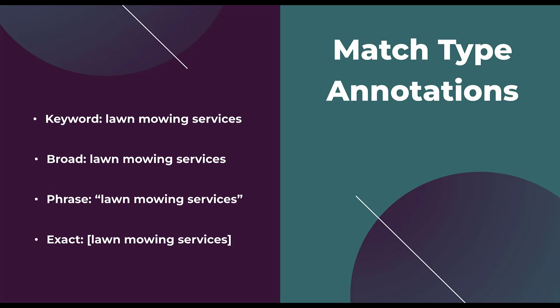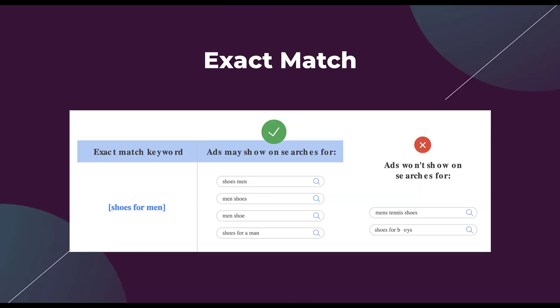Let's go into examples of the keyword match types in reverse order, starting with the most specific — exact match. Using the keyword "shoes for men" in braces, your ads may show for: shoes men, men's shoes, men shoe, shoes for a man. All of those variants are probably people looking for shoes for a man. These are the types of queries that your ads will show for if you use exact match keywords.